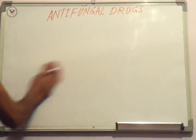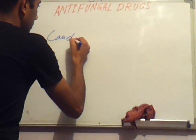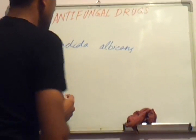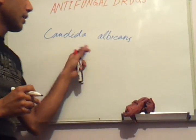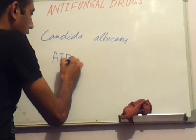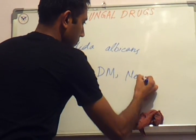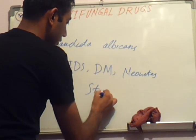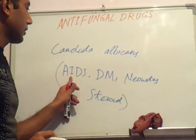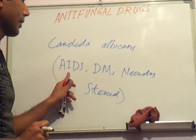Some fungi cause diseases in immunosuppressed persons. For example, Candida albicans is normal flora of the oral cavity and vagina. It can cause esophageal thrush and oral thrush in AIDS patients, patients with diabetes mellitus, neonates, and patients using steroid drugs. These four conditions produce an immunosuppressed state.